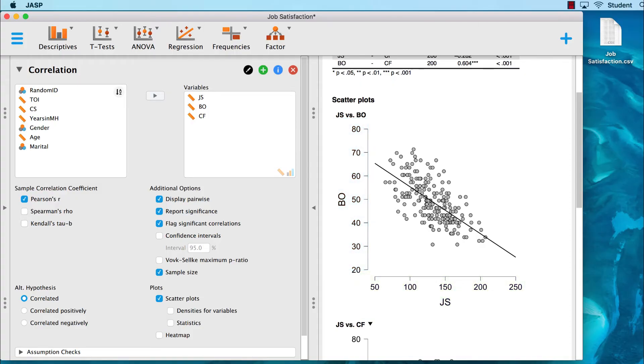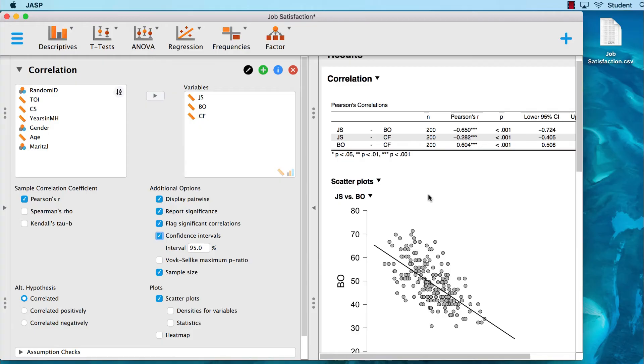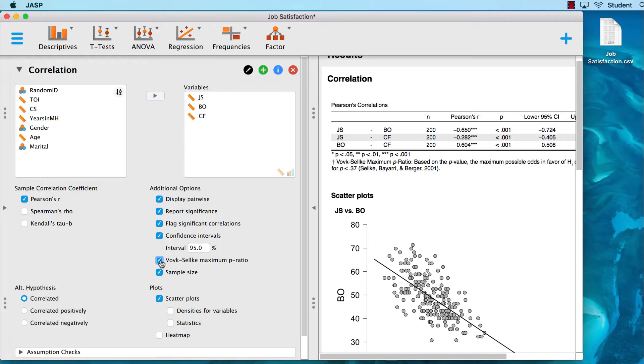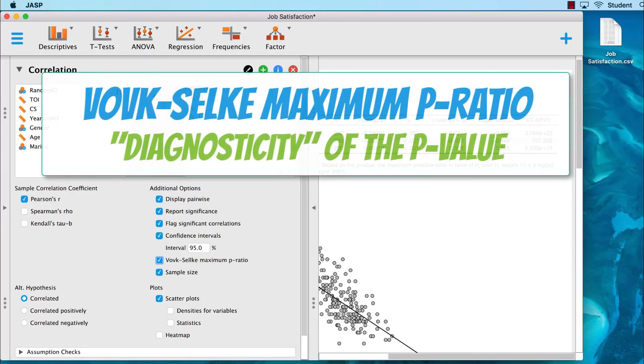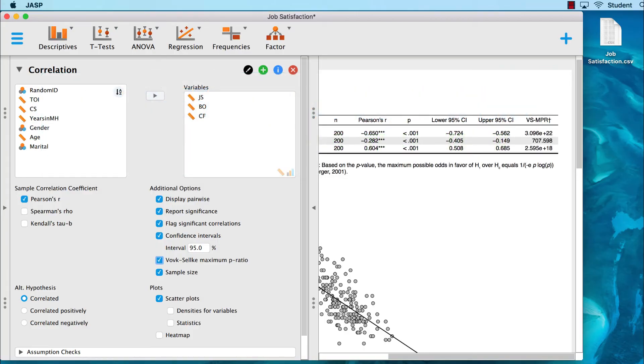I might also want to know about the 95% confidence intervals around these estimations. And I could ask for the Volk-Selke maximum p-ratio. So what is this? All p-values are not created equal. The Volk-Selke maximum p-ratio gives us a way to assess the diagnosticity of our p-value. It helps us to interpret the correlation. I would like to make a standalone video about this, but I'm still learning about it myself, and I'm working on explaining it to others. So in the meantime, I have included a link to a cartoon explanation of the procedure in the video description.